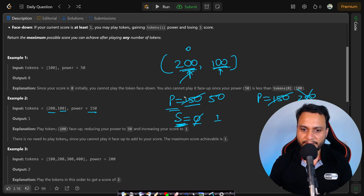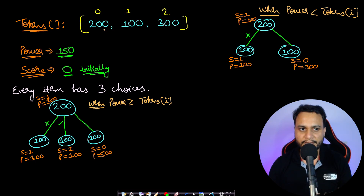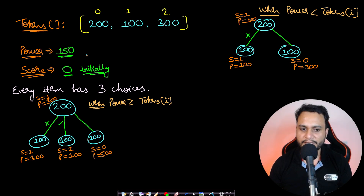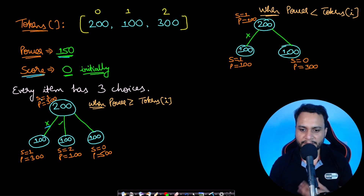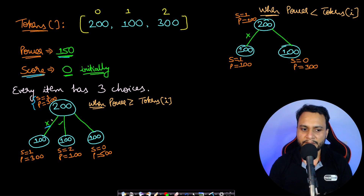Let's look at another example to understand how we can solve it. Say tokens are [200, 100, 300] and initial power is 150. The score always starts at 0. For each item we have at most three choices. Let's take a general state where score is 1 and power is 300.